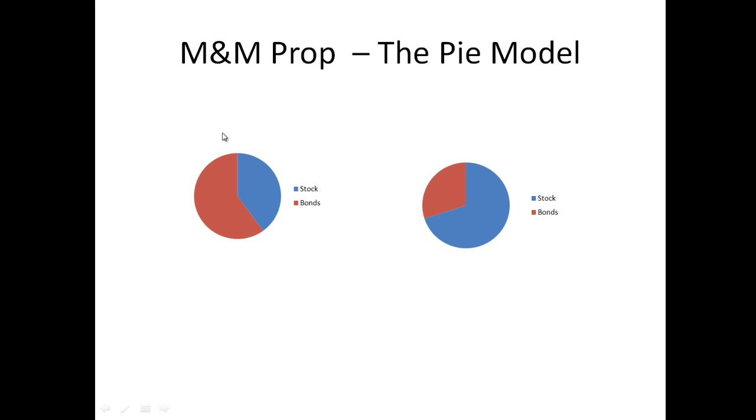And a common way this gets depicted is by using a pie model. The argument is that no matter how you slice the pie, it's still the same size. And the value of the firm, that's the pie, is made up of the amount of stock and the amount of bonds the firm has. So in this case we have 40% stock and 60% bonds. Here we change the percentage so now we have something like 70% stock and 30% bonds, but the size of the pie hasn't changed. So the value of the firm hasn't changed.